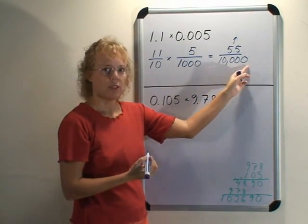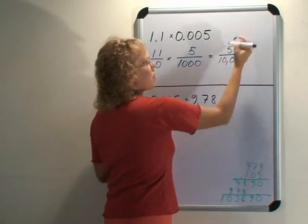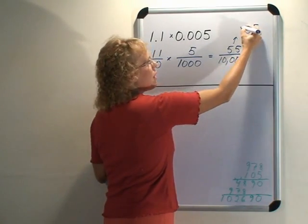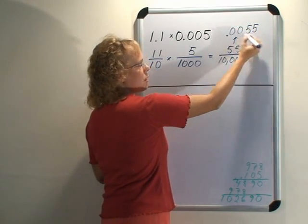And then we go back to a decimal. We need four decimals because it's ten thousand here as a denominator. So 55 and two more zeros here, so we get four decimals like that.